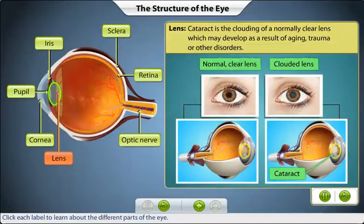Sometimes there may be a loss of vision due to clouding of the lens. This clouding, or cataract, can be corrected surgically by replacing the foggy lens with an artificial lens.